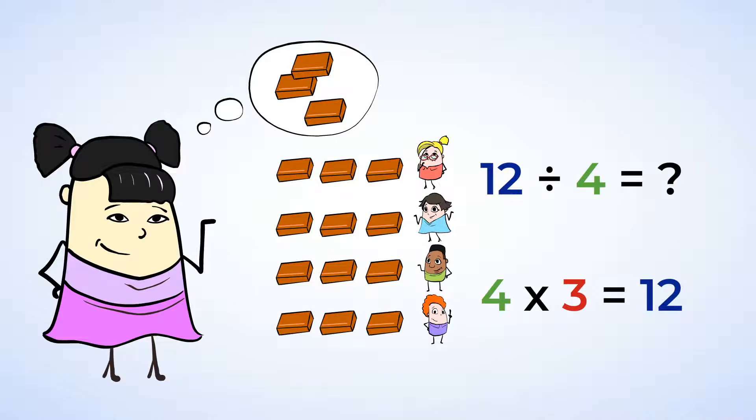So, 12 divided by 4 is 3. Each person can have 3 pieces of delicious chocolate.